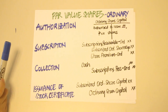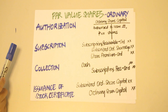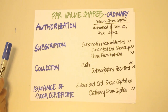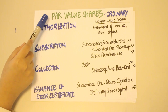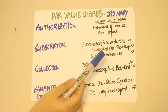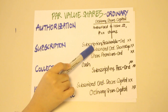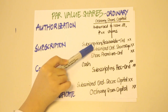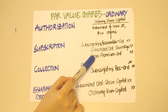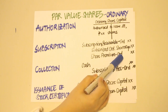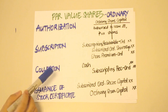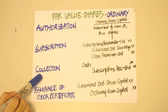Shares are subscribed when investors have contracted to acquire them but are still to be paid on a future date or on an installment basis. To record subscriptions, we debit Subscriptions Receivable – Ordinary, specifying the type of stock, and then credit Subscribed Ordinary Share Capital. If the share is issued above par, we also credit Share Premium – Ordinary for the amount in excess of the par value. You also have to indicate whether it's ordinary or preference.